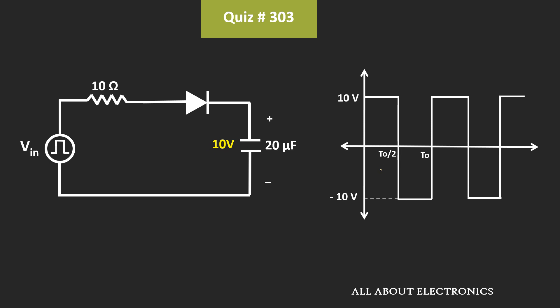Now, after this time T divided by 2, the polarity of the input signal gets reversed. That means now, the input to this circuit is equal to minus 10V.